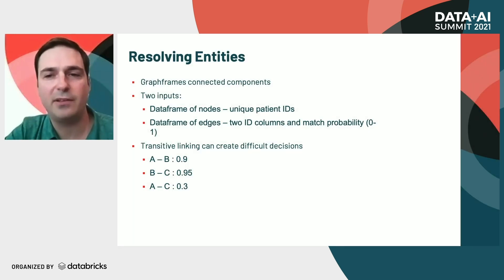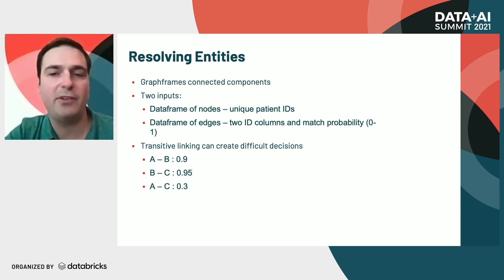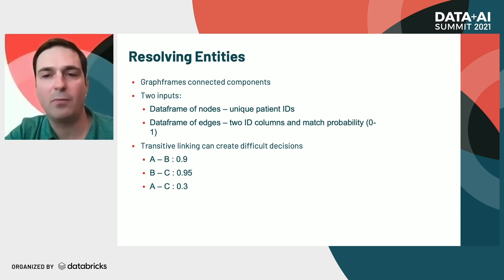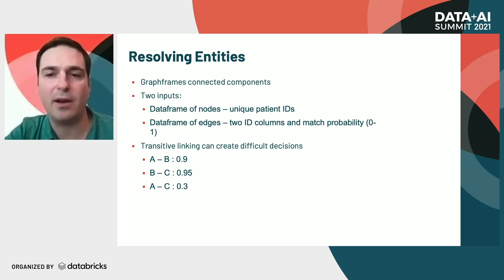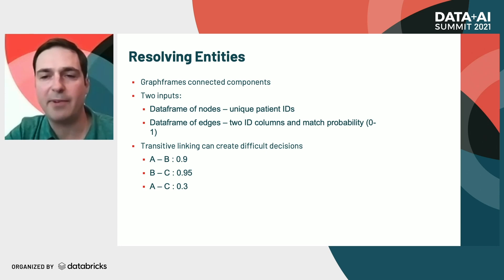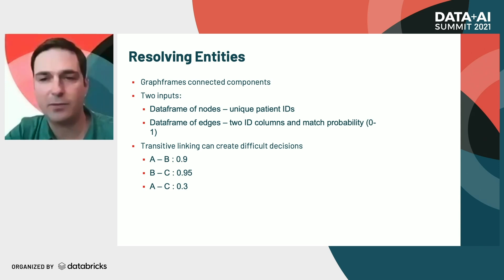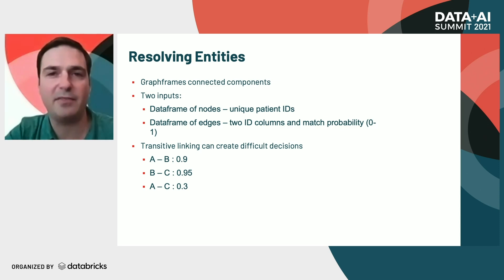We use the GraphFrames Connected Components package for resolving our groups. This requires an input of two data frames: a nodes data frame, where every unique patient ID is a node, and an edges data frame, where two nodes are in a row, with an edge represented by a match score between zero and one of those two nodes. One place that can become difficult here is transitive linking. Most of our demographic data is not very unique — race, gender, age. If you live in an apartment building, or if you're homeless, or live in a shelter, then even an address may not be very unique.